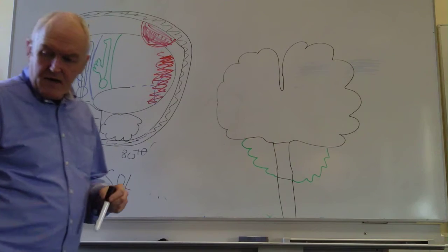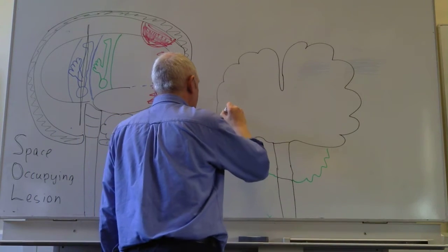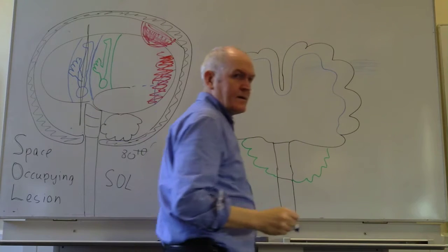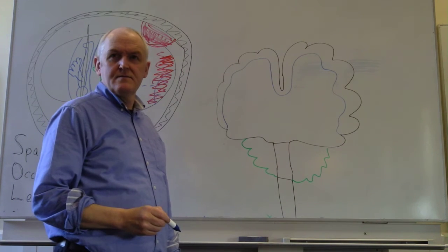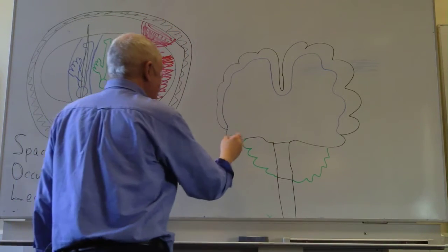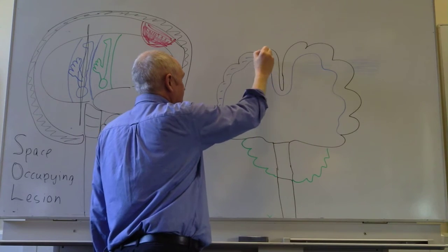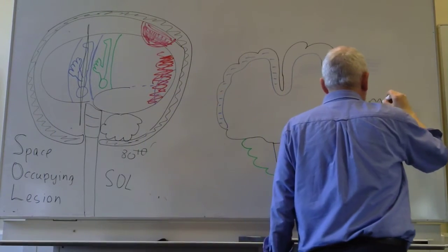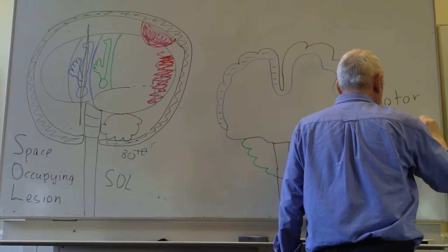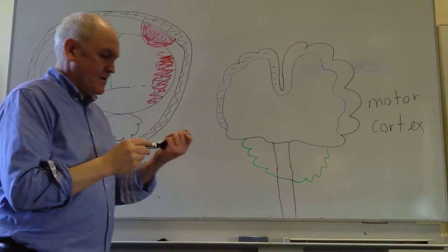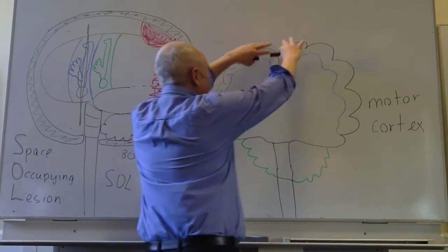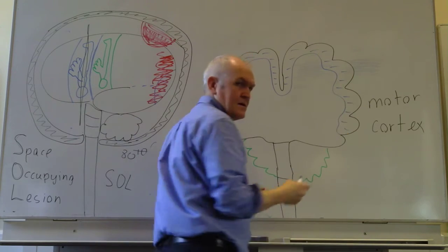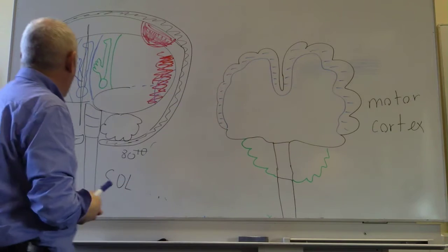Taking a coronal section means that this area around here is the motor cortex. The cortex is the outer part of an organ — so this is the cortex around the outside, and what we have here is the motor cortex, because we've taken a section of this brain at the level of the motor cortex.